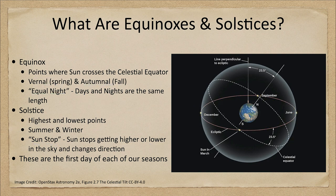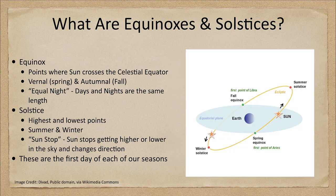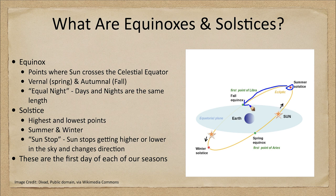These points are what we use as the first days of each of our seasons. Looking at the diagram, we see the summer solstice when the sun is highest in the sky, with the ecliptic tilted here. In summer the sun is much higher; six months later in fall it's equal at the autumnal equinox; then it's at its lowest point in winter; and then it continues back up to the spring equinox, with the cycle repeating year after year.